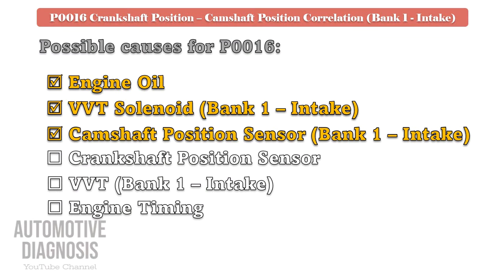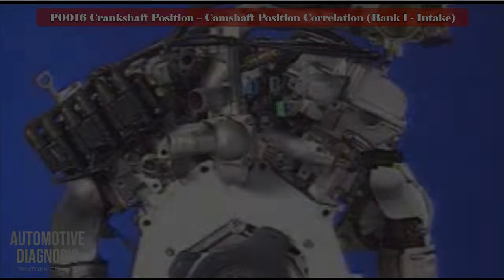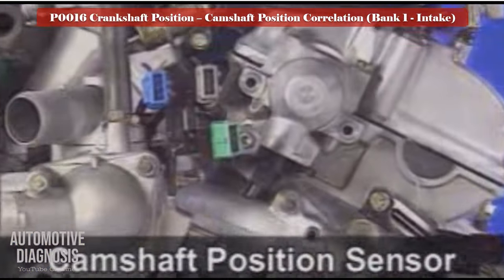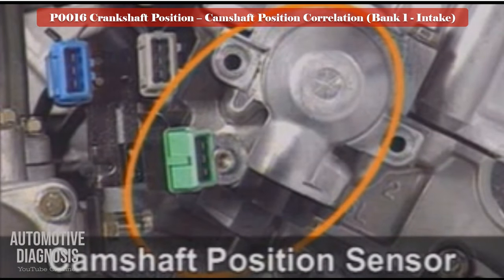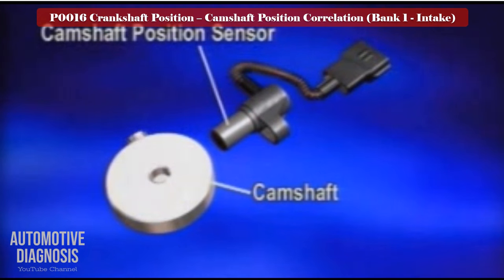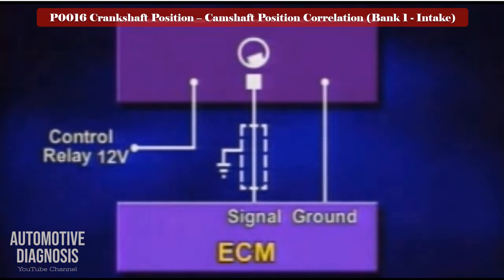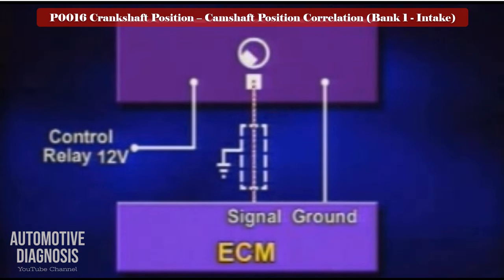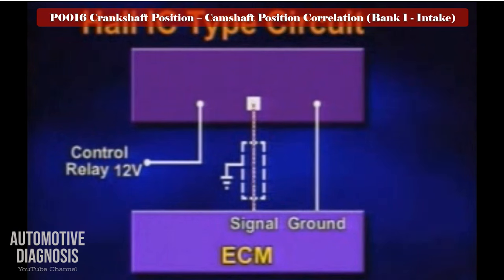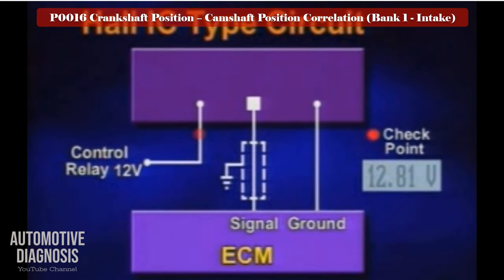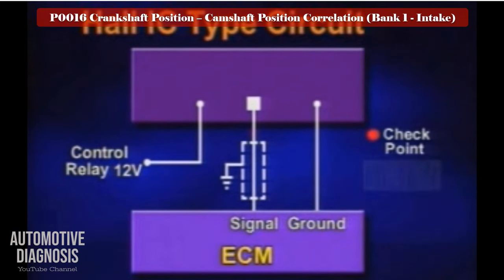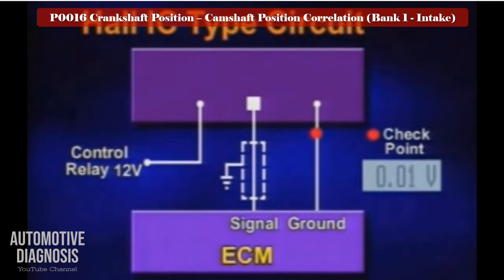Bank 1 intake camshaft position sensor testing procedure. Locate the camshaft position sensor installed at the end of the intake camshaft. This sensor reads the camshaft position and sends the signal to the PCM. Most of the time this sensor is the hall effect type with three pins: one pin is the power supply from the engine control relay, so you must have battery voltage on that pin when ignition is on; the other checkpoint is the sensor signal, which must be around 5V; and the last one is the ground. Check the wiring and remove the sensor to check it visually. If the CMP sensor is okay, go to the next step to test the crankshaft position sensor.